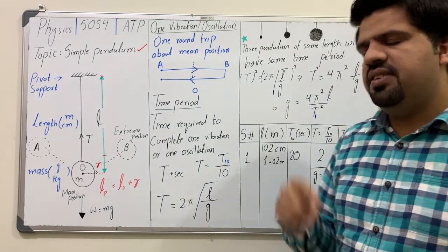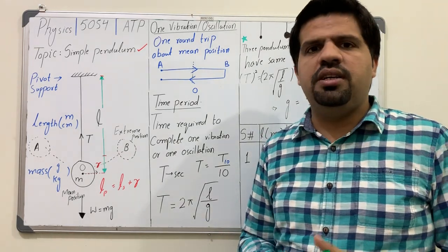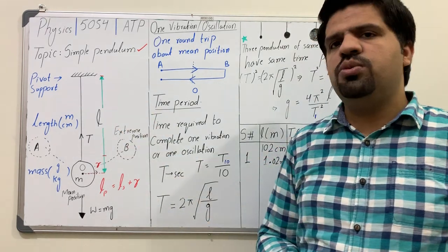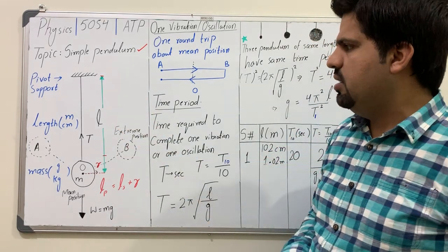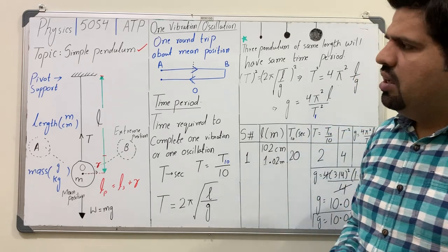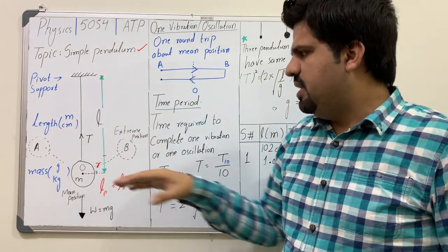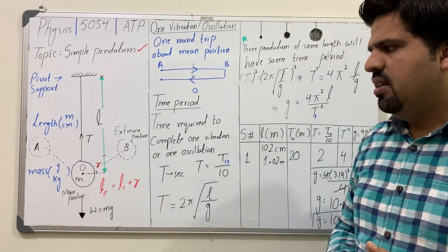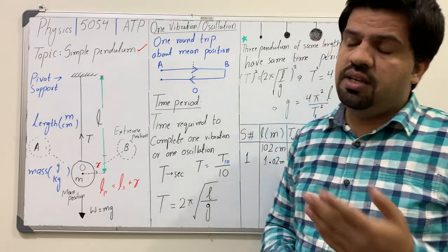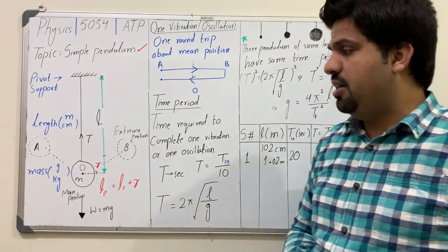Whenever you are performing a simple pendulum experiment, the first source of error or inaccuracy is in the measurement of length. If a student measures only the string length, an error will arise. If a student measures string length plus radius but the measurement is not accurate, there is still error because it requires great precision.